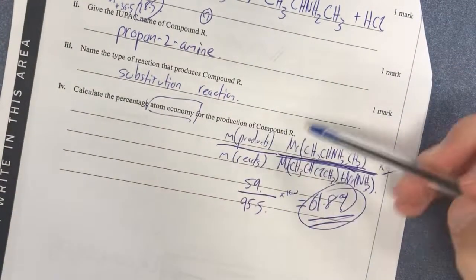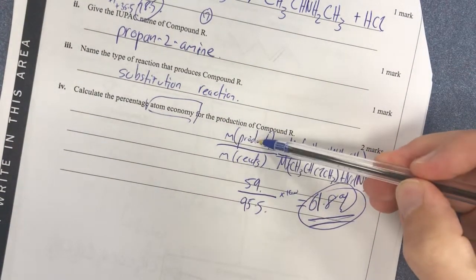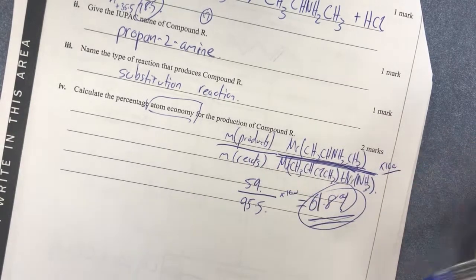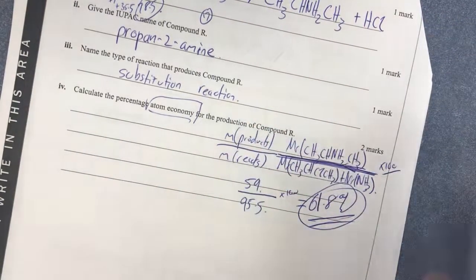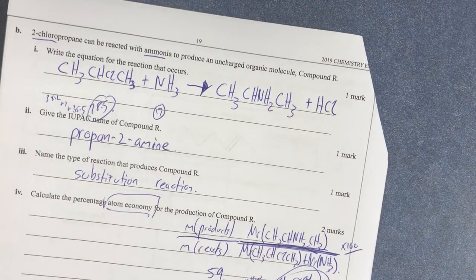Knowing that, again, atom economy is products, desired products, over reactants, times 100. So percentage of desired products in what you're actually doing. So therefore, that's question two, done and dusted.